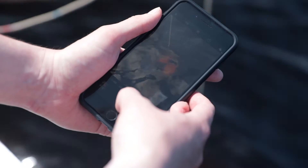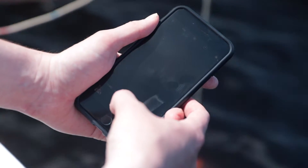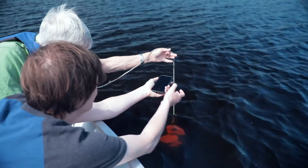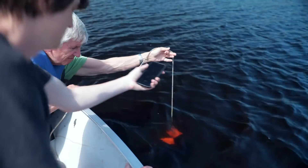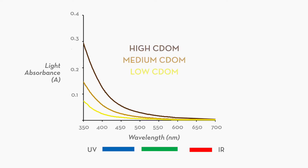Smartphone cameras, like other digital cameras, operate much the same way as the sensors in satellites like Landsat, collecting light in the blue, red, and green parts of the spectrum.